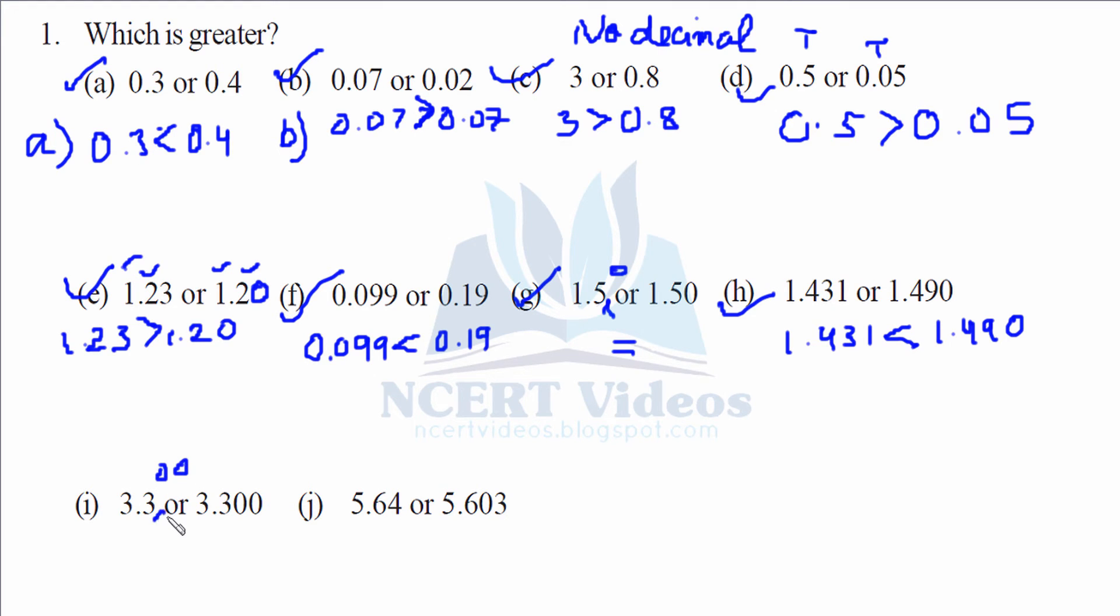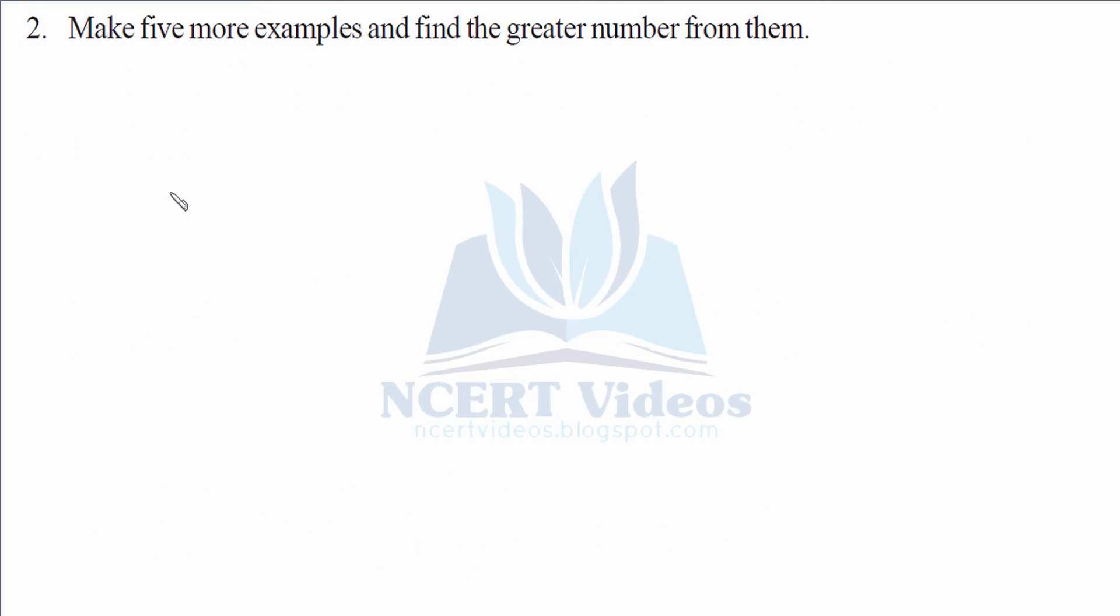Part i: here again, nothing written, write it as zero-zero. Hence you can see both digits are equal. Last part, part j: here the hundredths part is different. Look, it is 4 here, the other side is 0. Therefore 5.64 is greater than 5.603. That makes question number one.